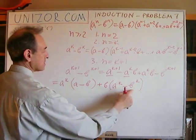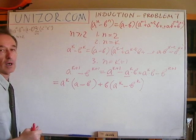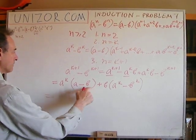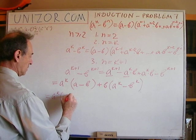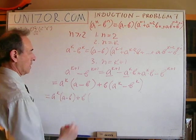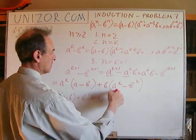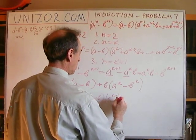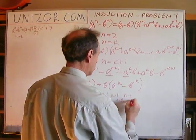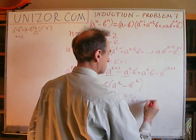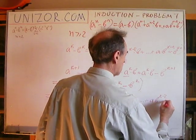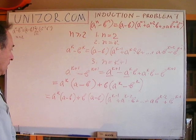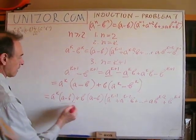Now, a to the k minus b to the k is exactly what I already assumed can be represented using the inductive formula. So I'll substitute it. I leave the first term a to the k times (a minus b) unchanged, and I represent a to the k minus b to the k as a minus b times the sum: a to the k minus 1 plus a to the k minus 2 times b, and so on, up to b to the k minus 1. Now I can factor out a minus b from both terms.